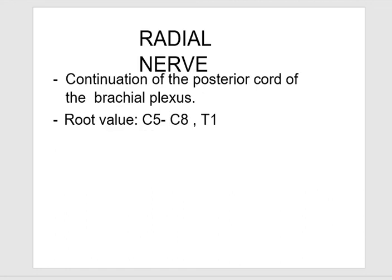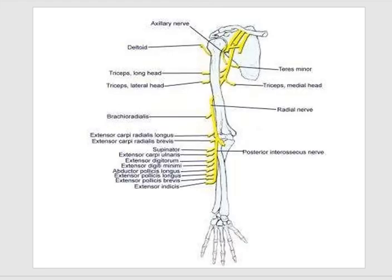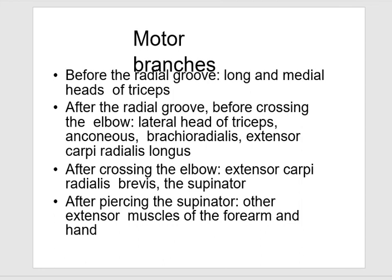The radial nerve is a continuation of the posterior cord of the brachial plexus (C5 to C8 and T1). Its course, branches, and motor supply are shown in the diagram.